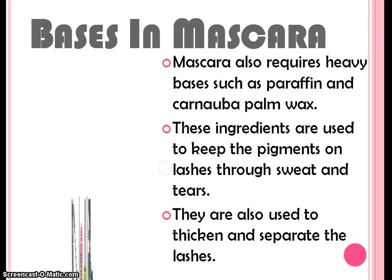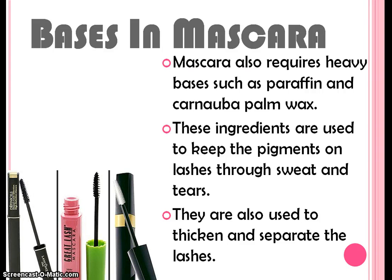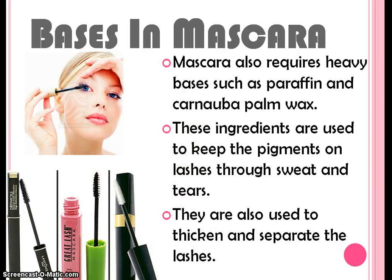Mascara also requires a heavy base such as paraffin or carnauba palm wax. These ingredients are used to keep pigments on eyelashes through sweat and tears, and are also used to thicken and separate eyelashes.